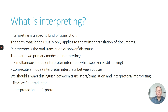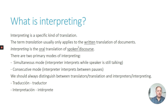There are primarily two modes of interpreting that we're going to talk more about in this video. The first is simultaneous — that's when the interpreter interprets while the speaker is speaking with no pauses. And the second primary mode is consecutive interpreting — that's when the interpreter interprets between pauses. There may be two different parties: one speaks, there's a pause for the interpreter, then the other speaks, there's a pause for the interpreter. That's consecutive mode.